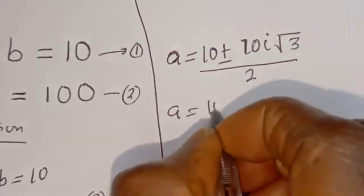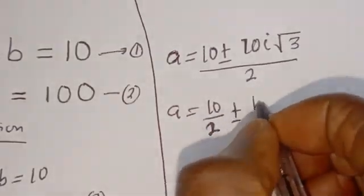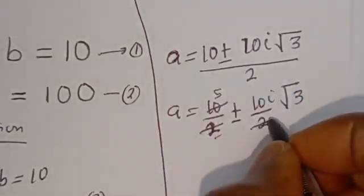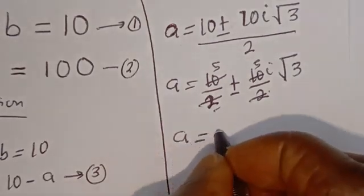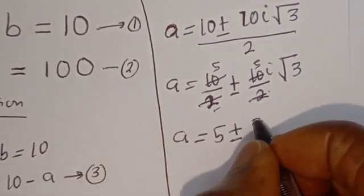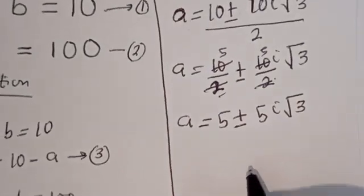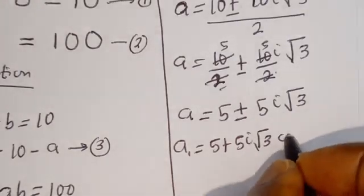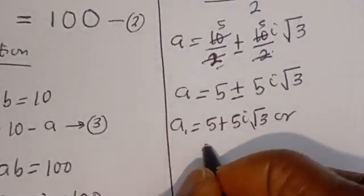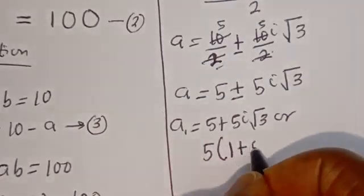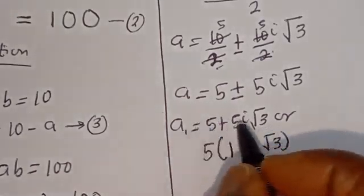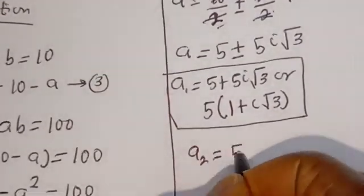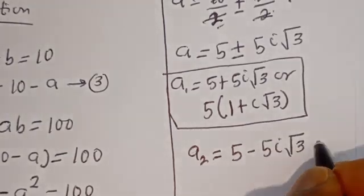So a equals 10 plus or minus 10i root 3, all divided by 2. This gives a equals 5 plus or minus 5i root 3. Therefore a1 equals 5 plus 5i root 3, or factoring out 5: 5 bracket (1 plus i root 3). And a2 equals 5 minus 5i root 3.